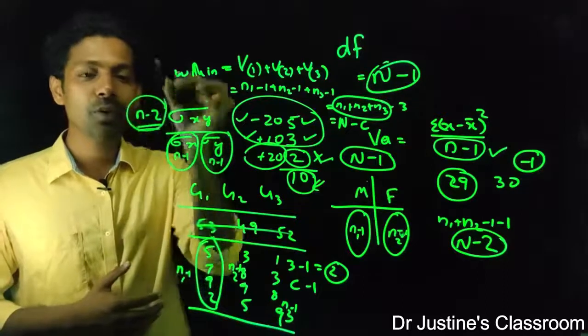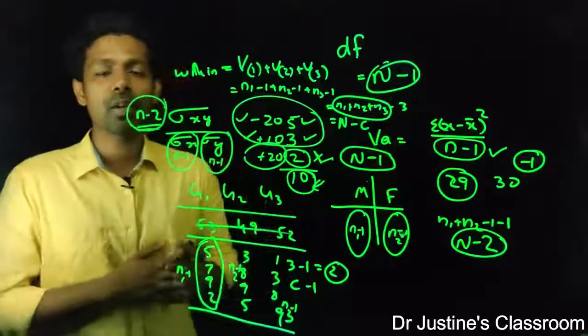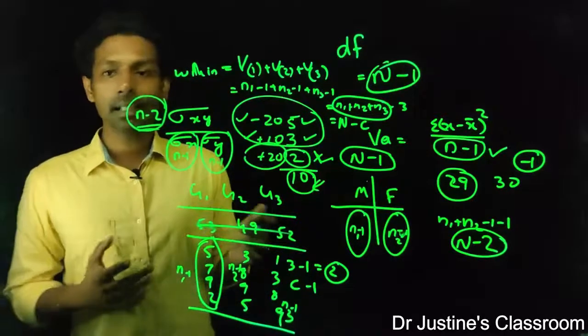So n minus 2 is the degree of freedom of correlation. So it's always n minus 1.